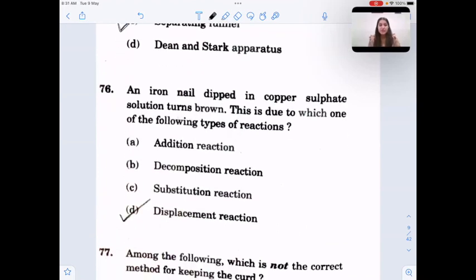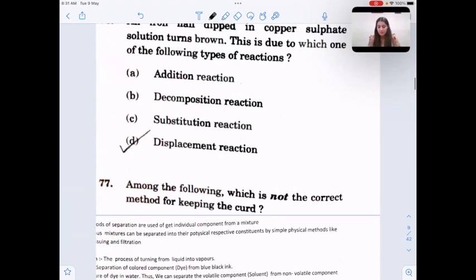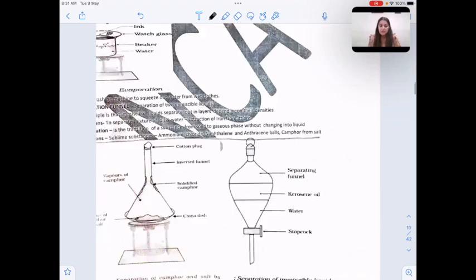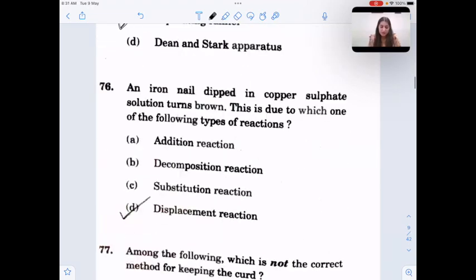An iron nail dipped in copper sulfate solution turns brown. This is due to which type of reaction? This one is example of displacement reaction. The change in color is due to displacement reaction.